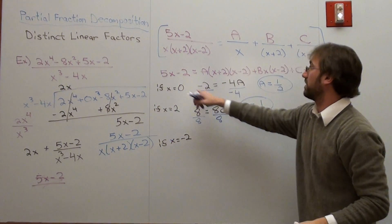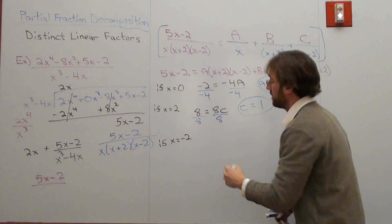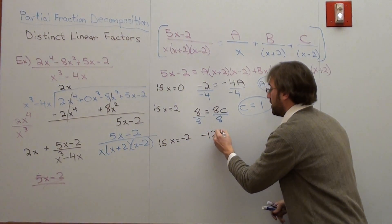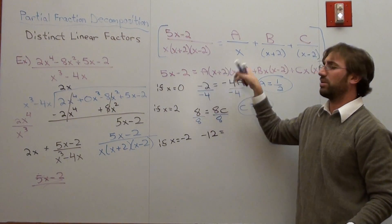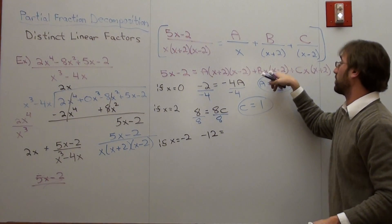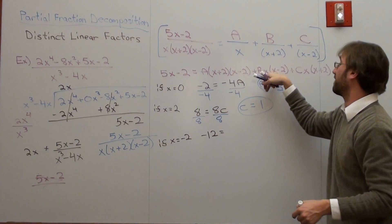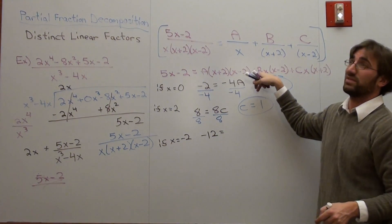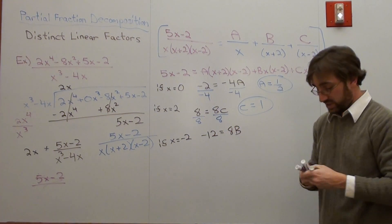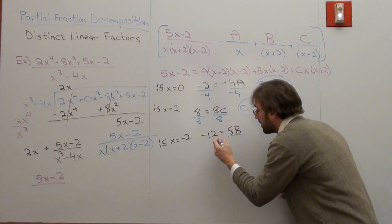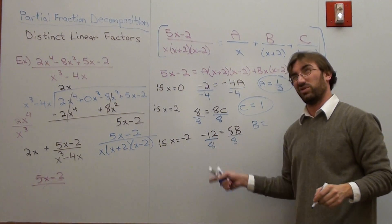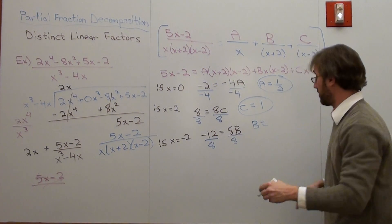So, if x is negative 2, then I'm going to get negative 10 minus 2, which is negative 12, equals, if I put in negative 2, that's going to be 0, don't even have to worry about it. If I put in negative 2, that's going to be 0, don't even have to worry about it. If I put in negative 2, that's going to be negative 4. Negative 4 times negative 2 is 8, 8B. Divide by 8 on both sides, and you get B equals, let's see, that's 6 over 4, that's 3 over 2, negative 3 halves.